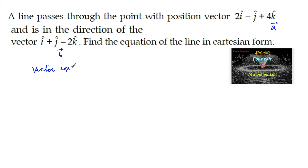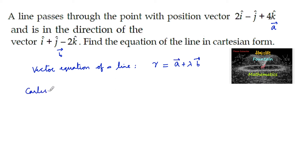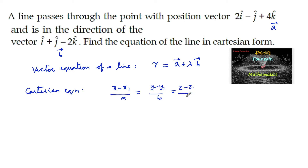The vector equation of a line is r = a + λb. The Cartesian equation is: (x - x1)/a = (y - y1)/b = (z - z1)/c,